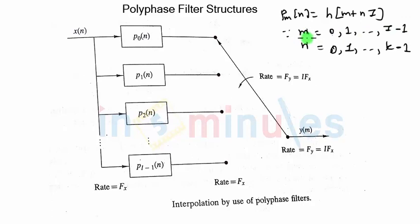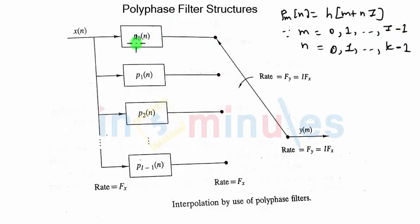In the previous example we took I equal to 2, and hence we had two filters: P0 and P1. If you are interpolating by a factor of 4, there will be 4 polyphase filters: P0, P1, P2, P3. In short, you have to go up to P of I minus 1.